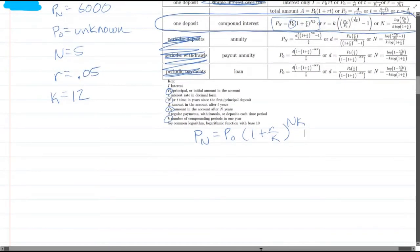So we're going to plug in all the values that we have. 6,000 is PN. P0 we don't know, so we're leaving it as P0. So R is 0.05 divided by K is 12 to the power of N, 5 times K is 12.